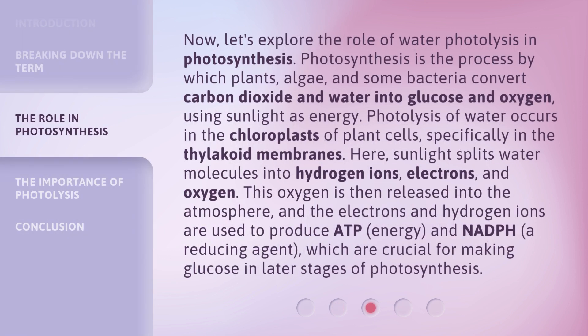Now, let's explore the role of water photolysis in photosynthesis. Photosynthesis is the process by which plants, algae, and some bacteria convert carbon dioxide and water into glucose and oxygen, using sunlight as energy. Photolysis of water occurs in the chloroplasts of plant cells, specifically in the thylakoid membranes. Here, sunlight splits water molecules into hydrogen ions, electrons, and oxygen. This oxygen is then released into the atmosphere, and the electrons and hydrogen ions are used to produce ATP (energy) and NADPH (a reducing agent), which are crucial for making glucose in later stages of photosynthesis.